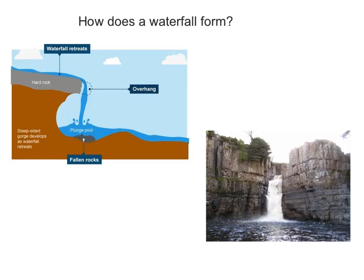But before we look at a gorge I just want to highlight this quite good diagram here, which shows us the harder rock above, the softer rock below, and the overhang which eventually collapses down into the plunge pool as boulders, fallen rocks which abrade the base of the plunge pool further.